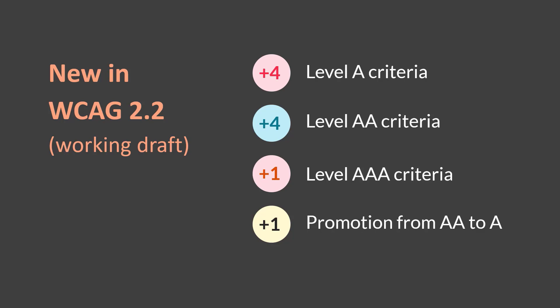What is new in the WCAG 2.2 working draft? First of all, all success criteria from 2.0 and 2.1 are included in 2.2 — each of these criteria are exactly the same, word for word. One change, however, is that an existing criteria, 2.4.7 Focus Visible, has changed from level AA in WCAG 2.1 to level A in 2.2 — essentially it has been promoted. In addition to this, there are nine new success criteria proposed: four at level A, four at level AA, and one at AAA.